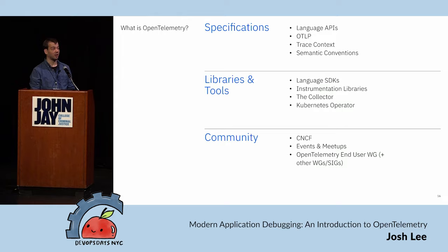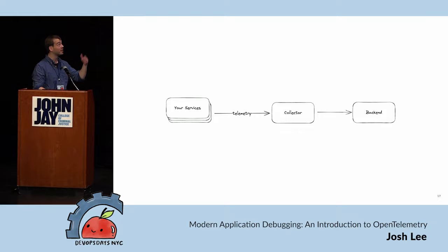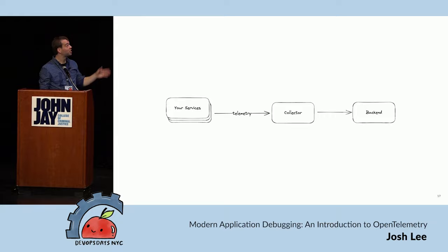The end user working group in particular is great for real use cases and stories from actual people using OpenTelemetry in production. The architecture is simple: our services send telemetry to the collector, and the collector forwards it to the backend. If you're using a vendor, you might replace the collector with a vendor's proprietary agent, but generally that's what it looks like.